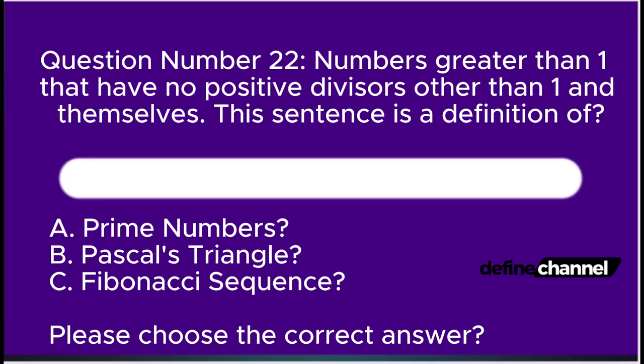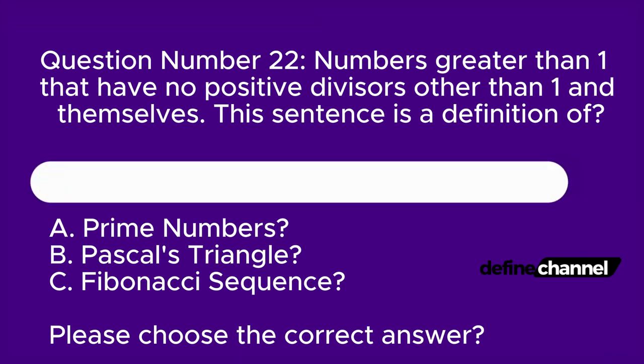Question number twenty-two. Numbers greater than one that have no positive divisors other than one and themselves. This sentence is a definition of: A. Prime numbers, B. Pascal's triangle, C. Fibonacci sequence. Please choose the correct answer.